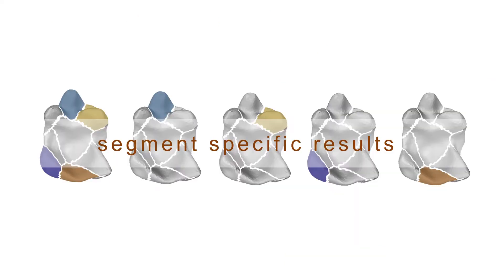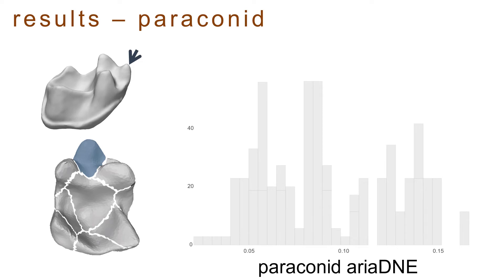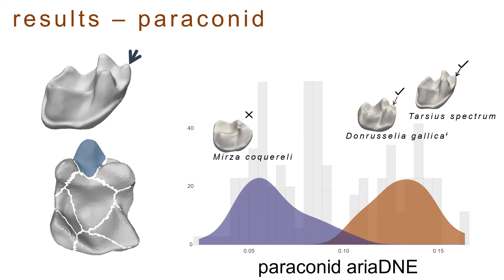Next I'll be focusing on results specific to the mesial-most segment. The paraconid cusp and the corresponding region of teeth without paraconids were both captured within the mesial-most segment. When the curvature of the segment was calculated as Ariadne, the distribution of species-average values doesn't have a neatly normal distribution. But when we group the values of genera with present paraconids and absent paraconids, a nice pattern emerges. Additionally, the values of genera with questionable paraconid presence — like Lemur catta, which we mentioned at the beginning — nest neatly between the distributions of absent and present.